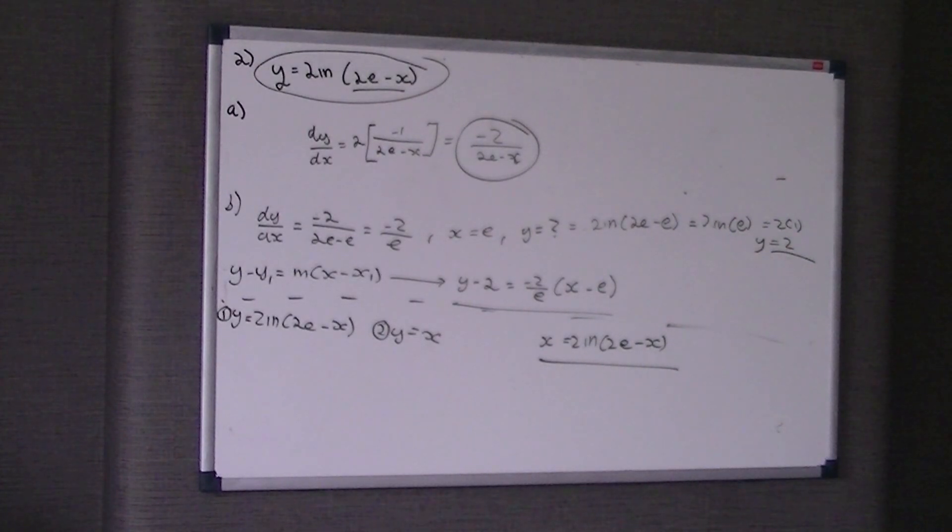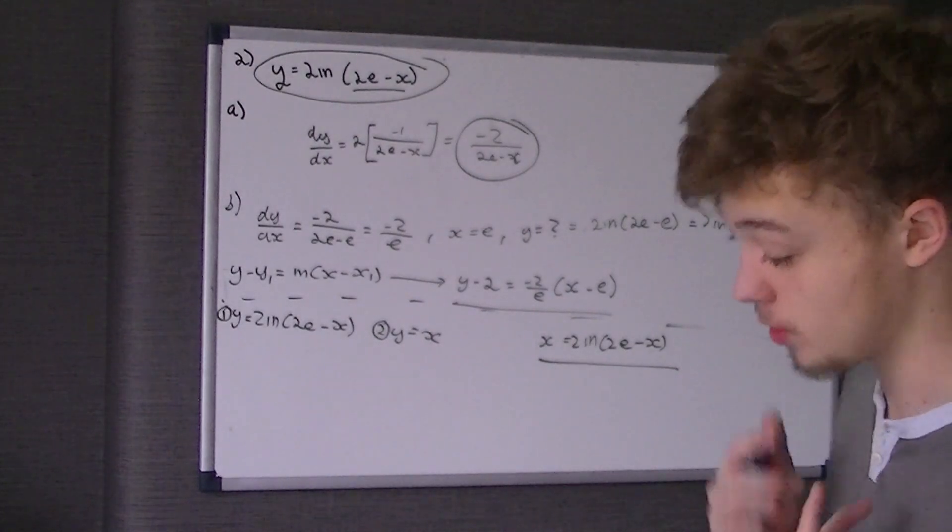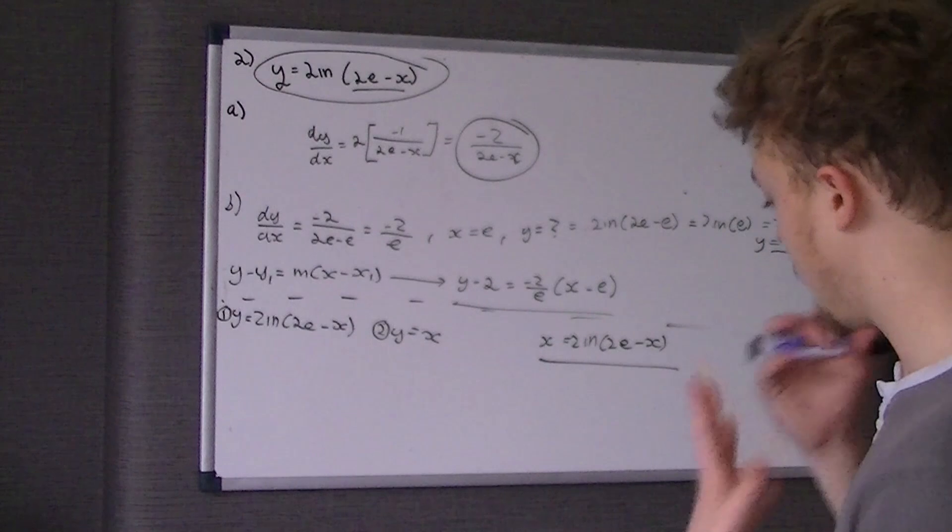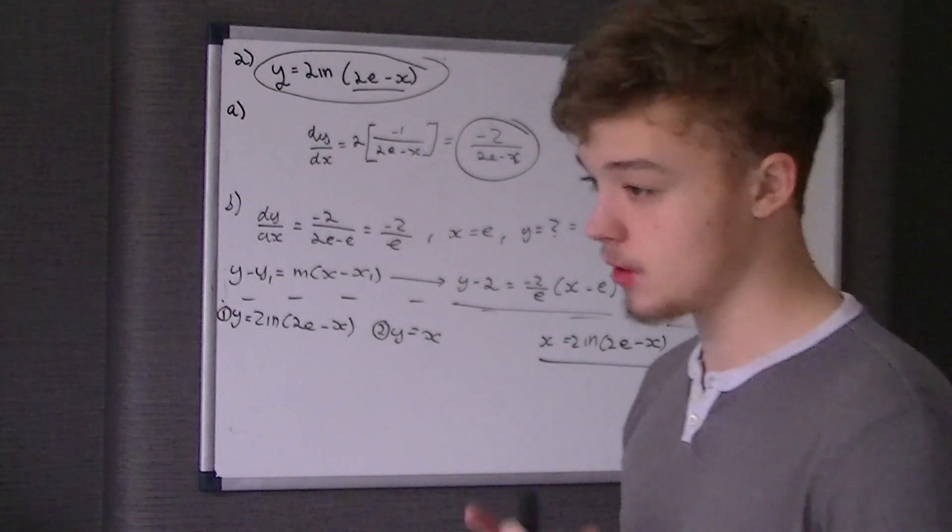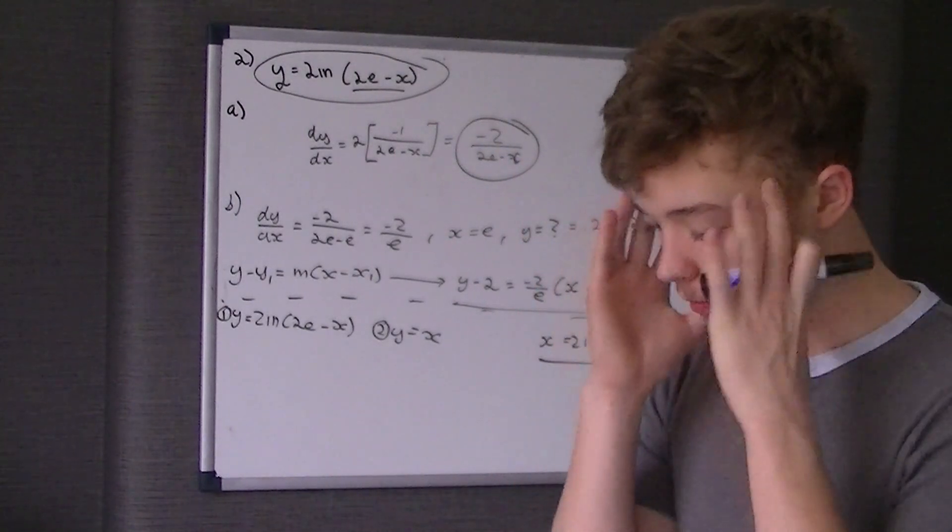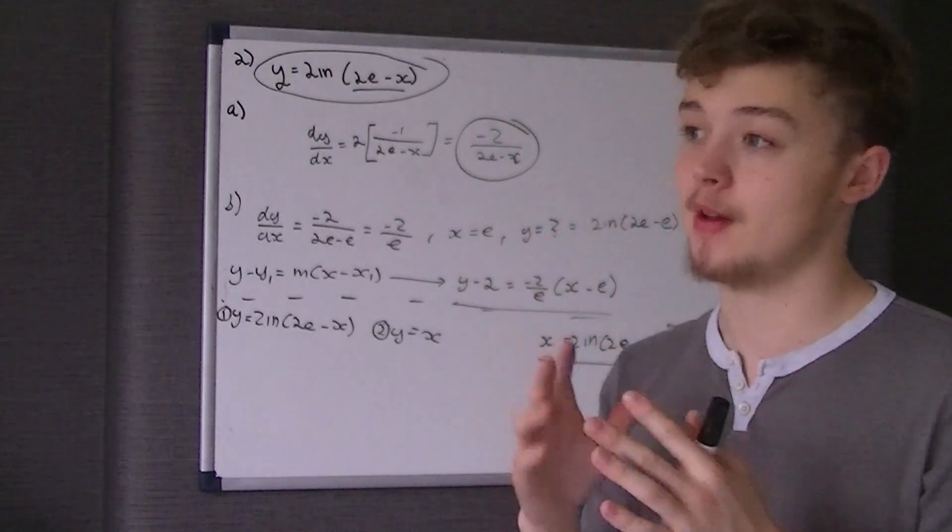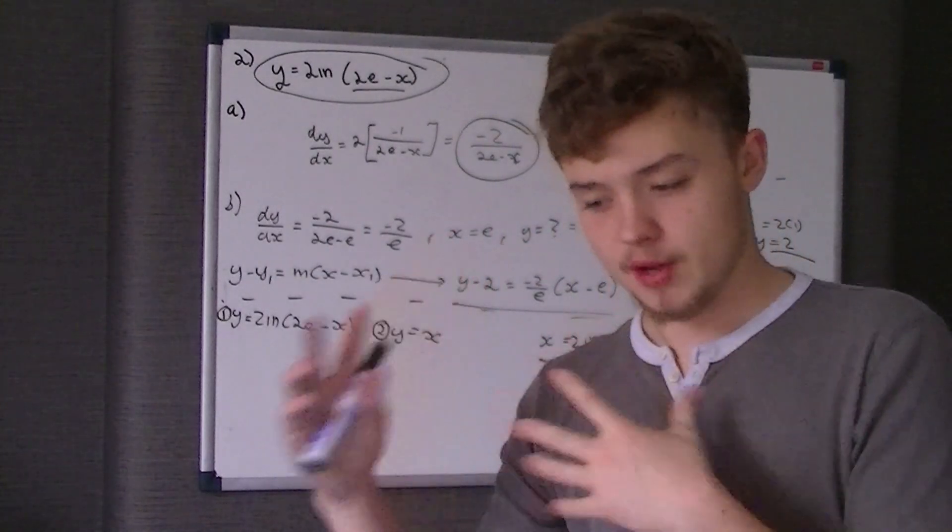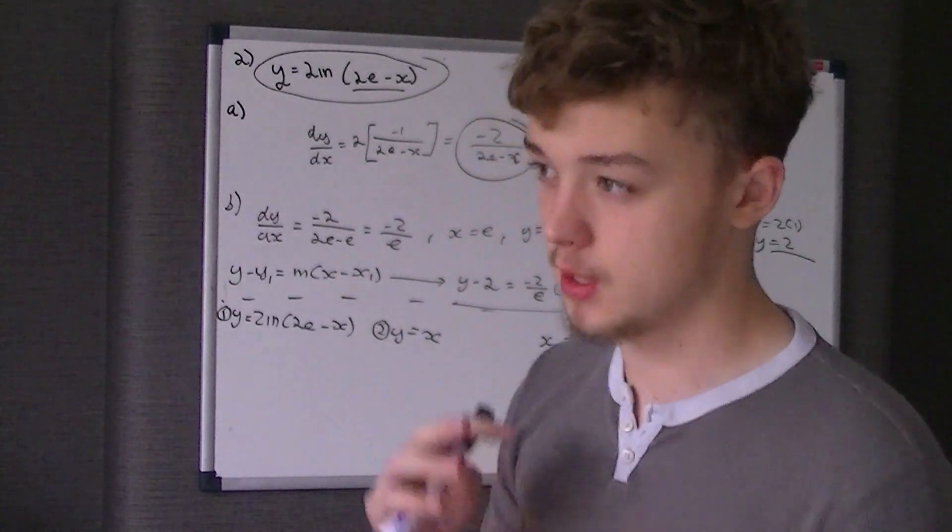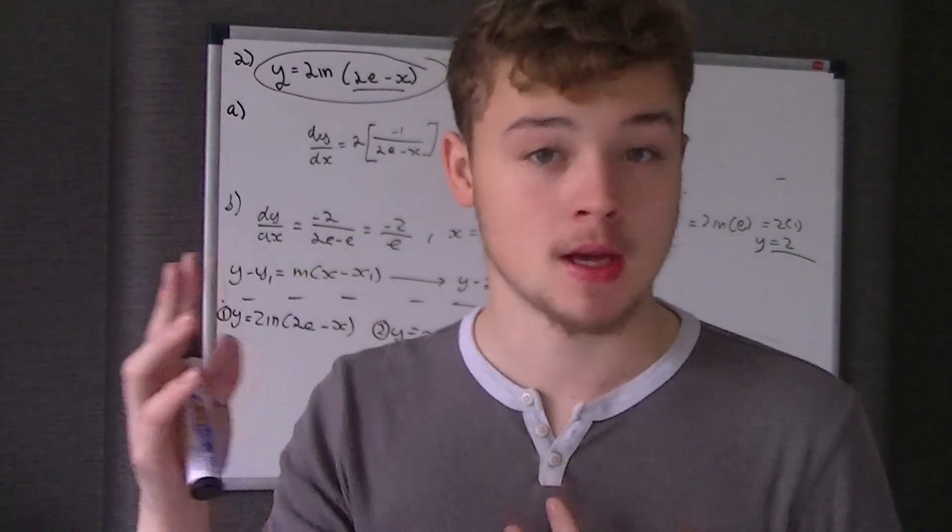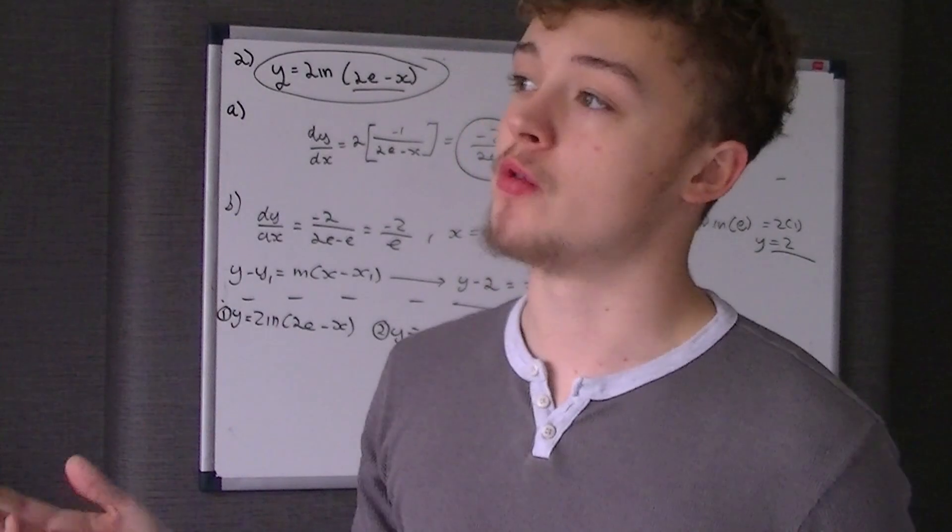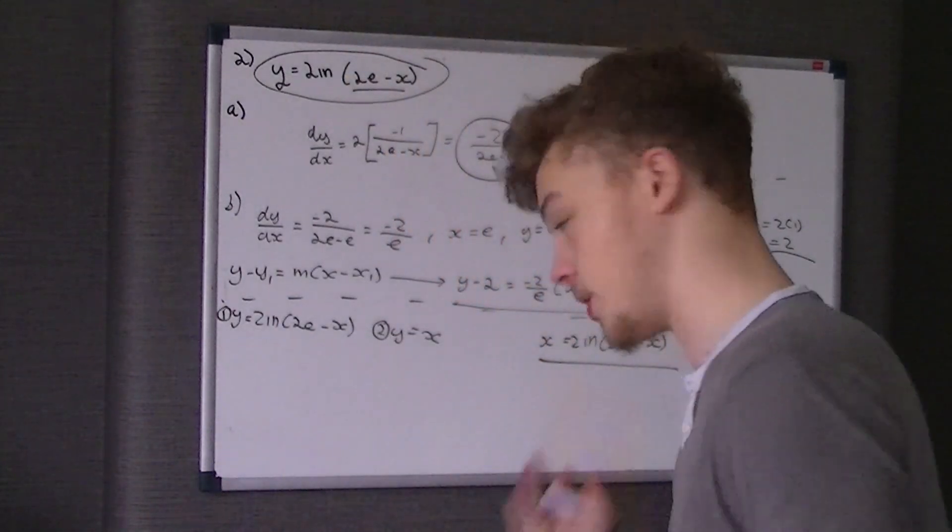What we're gonna do is just let y equal y. Because they're both equal y, we can make them equal to each other. So therefore, we're just gonna end up with x is equal to 2 ln of 2e take x. We're to prove that it lies between 1 and 3. When you're proving something lies between 1 and 3, you think what thing have I done in C3 that shows a change of sign?